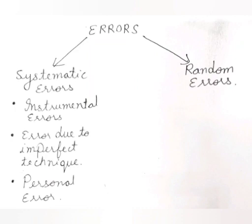So what do you understand by errors? For this I will give you an example. Let's say you have a table which originally has a length of 1 meter, and when you measured the length the answer was 0.9 meter. So here there is an error of 0.1 meter. This was calculated by subtracting 0.9 from 1. So the real definition of error is: it is the difference between the true value and the measured value.